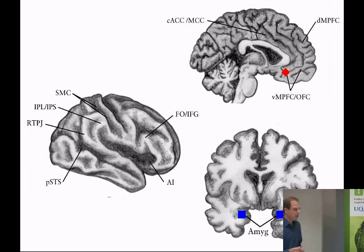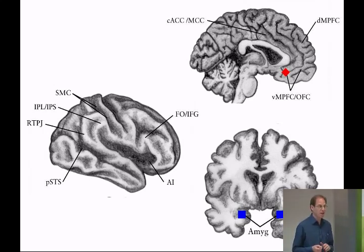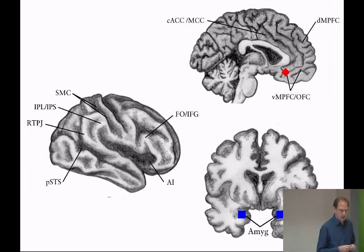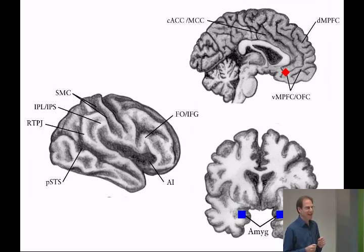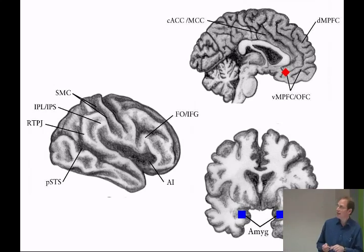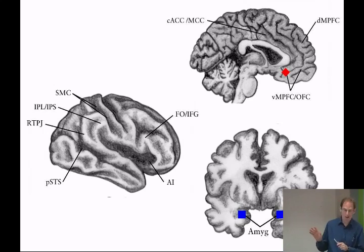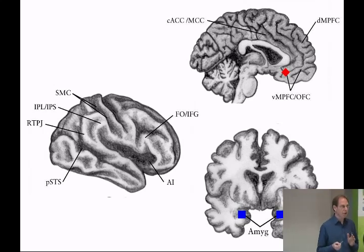That leads me on to the neuroscience. Empathy isn't associated with a single region of the brain — there are many different parts that have shown different associations with empathy. Instead we might talk about an empathy circuit, a network of regions. On this chart you can see at least ten different regions, and for reasons of time I'll just go through a few of them.